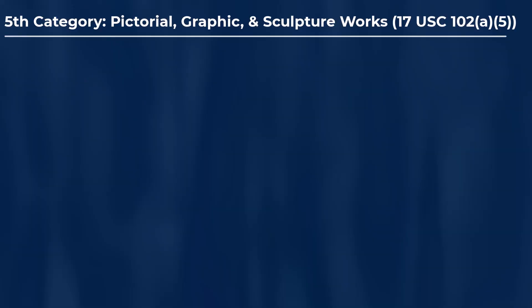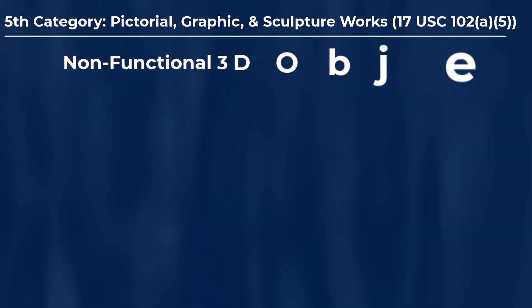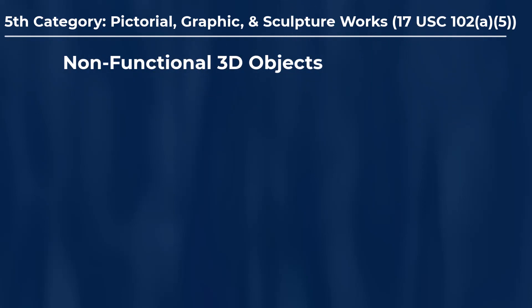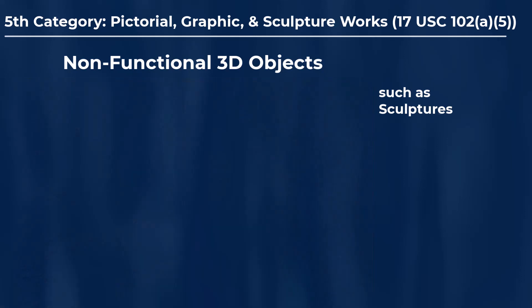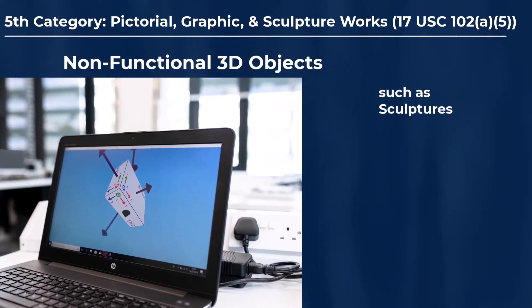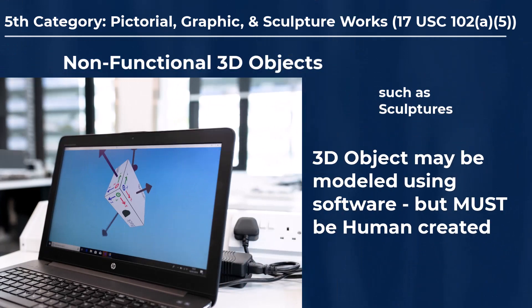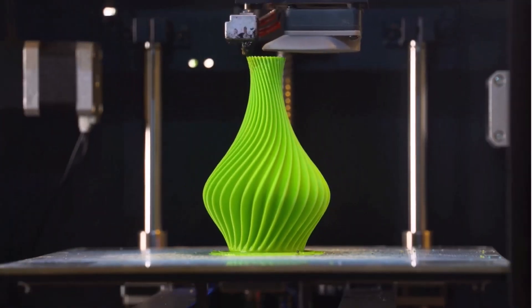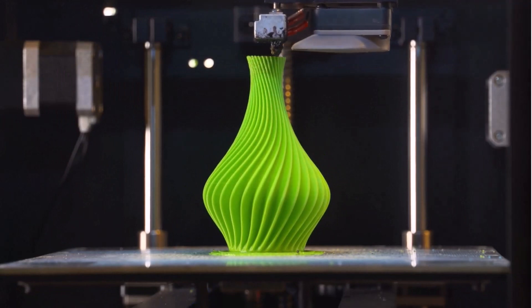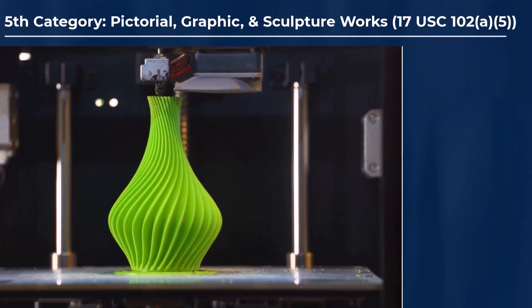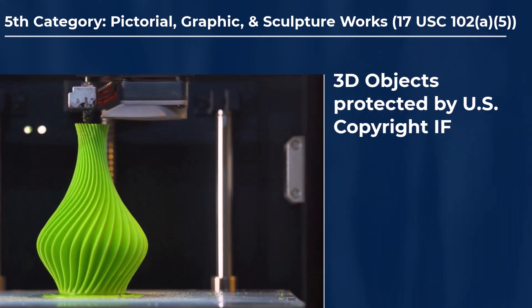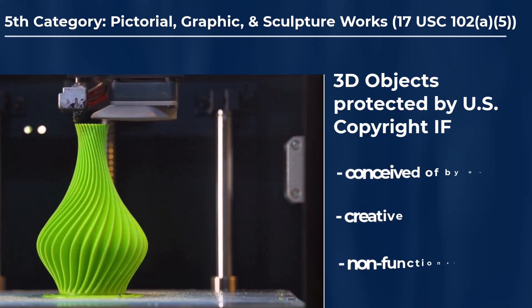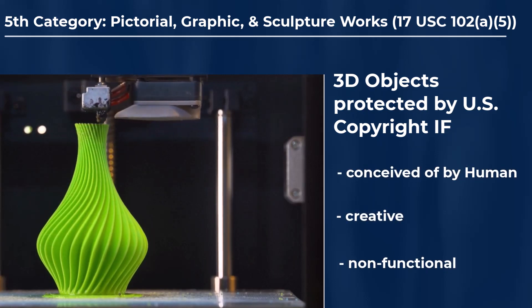Also included in this fifth category are three-dimensional (3D) non-functional artwork, which could include things like sculptures. Note that sculptures need not be handmade. For example, a given sculpture could be designed by a human using some type of 3D modeling software and then 3D printed. The resulting 3D printed object, as long as it's generally non-functional, may be an example of a sculpture capable of being protected by U.S. copyright, assuming the 3D printed object was original, creative, and non-functional.